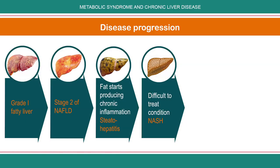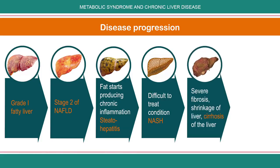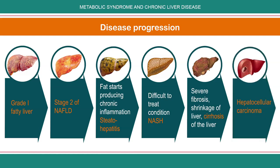Once it progresses to NASH, it is more difficult to reverse. About 25 to 30% of people then go on from NASH to cirrhosis of the liver, where severe fibrosis sets in, the liver shrinks, and cirrhosis becomes irreversible. And it doesn't stop there — unfortunately, about 25% of those with cirrhosis go on to develop hepatocellular carcinoma, or liver cancer. So what started as an innocuous condition — fatty liver — can become steatohepatitis, then cirrhosis, and finally hepatocellular carcinoma. Research is still ongoing to identify who will progress from one stage to the next.